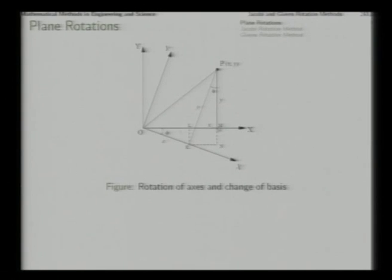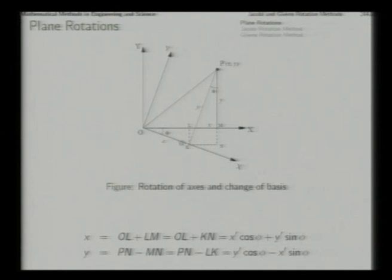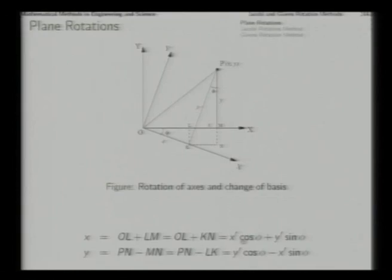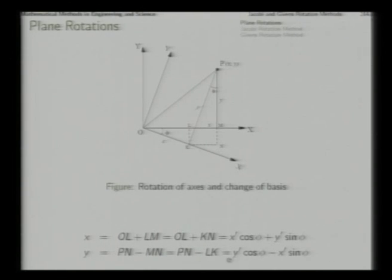To express the old coordinates x and y in terms of the new coordinates: x equals O-L plus L-M. From triangle O-K-L, O-L is x-prime times cos(phi), and L-M equals K-N which from triangle P-N-K is y-prime times sin(phi). Similarly, y can be written as P-N minus M-N: P-N is y-prime cos(phi) and M-N equals L-K which is x-prime sin(phi). So we get x = x'cos(phi) - y'sin(phi) ... wait, x = x'cos(phi) + y'sin(phi) and y = y'cos(phi) - x'sin(phi).